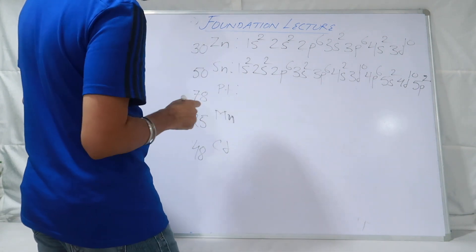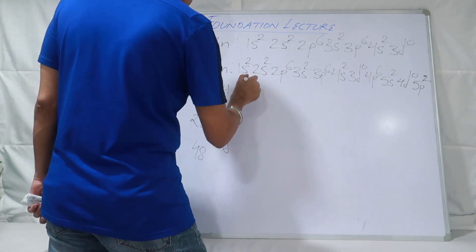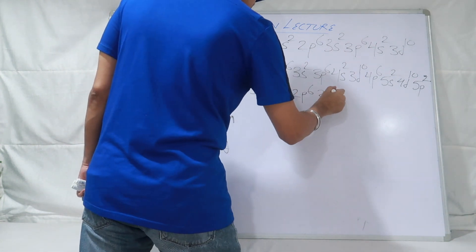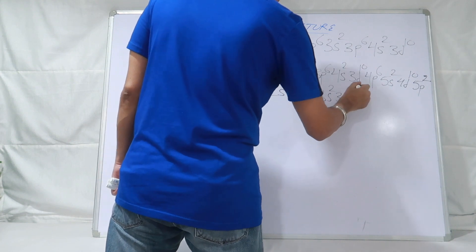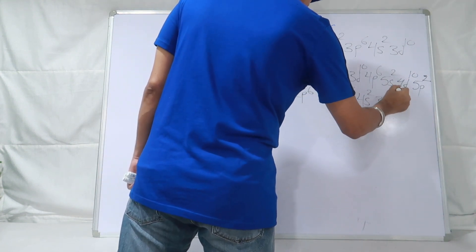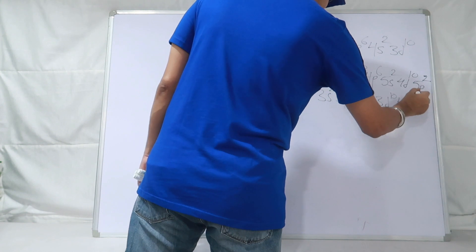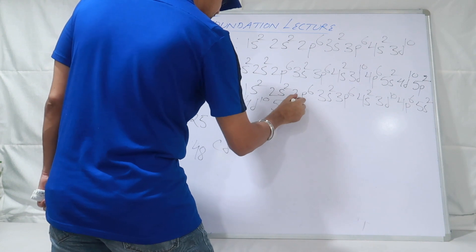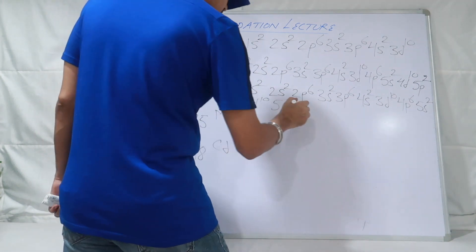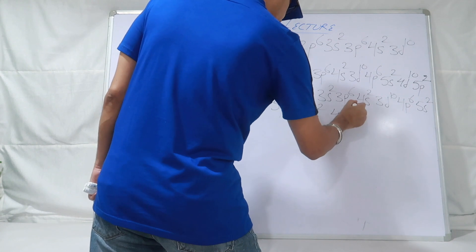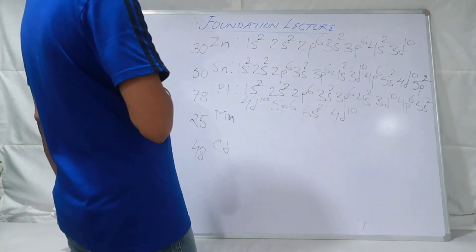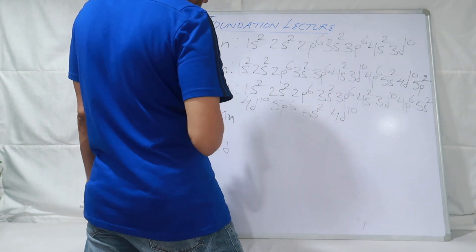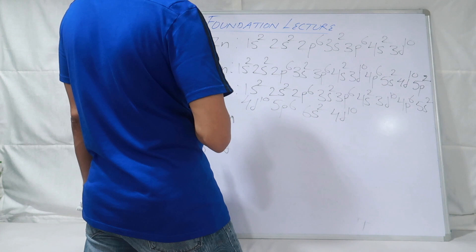Platinum dekhte hain — apne aap likh lo aap, aur phir dekho maine kya likha hai. 1s2, 2s2, 2p6, 3s2, 3p6, 4s2, 3d10, 4p6, 5s2, 4d10, 5p6 — yahan tak 54 ho gaya. 6s2 — 56. 6s2 ke baad beech mein kya hoga? 4f14 — 56+14=70. Phir 5d10 — 80. Lekin 78 pe stop ho jaana tha, to 5d8 likhenge.